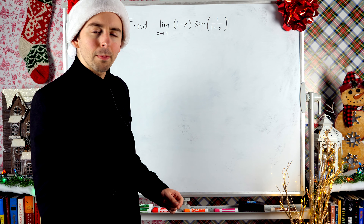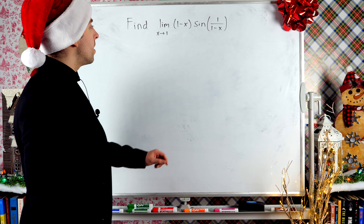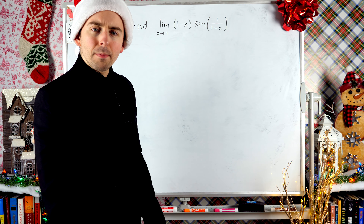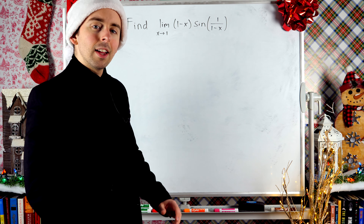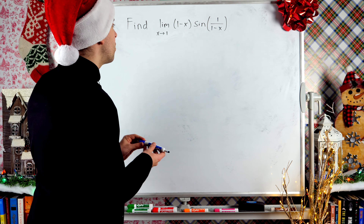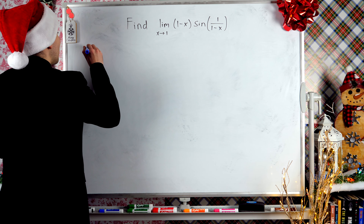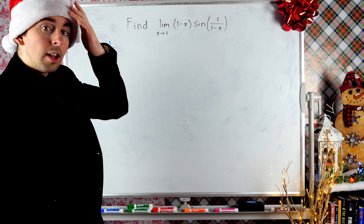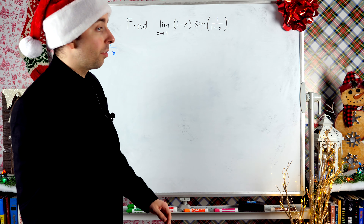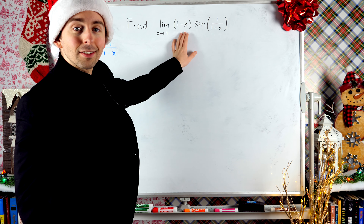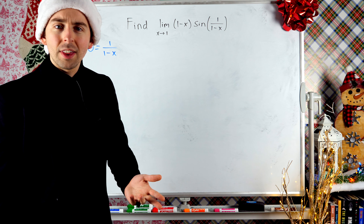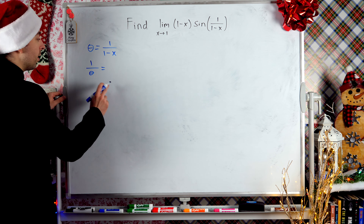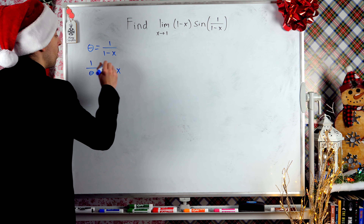So what do we do? Let's try a re-expression. Instead of having 1/(1 - x) inside the sine function — which is kind of messy — I might be able to get a better idea of what's going on if I give that a simpler name. I'm going to pick another variable, say theta, and define theta as 1/(1 - x). But my function also has (1 - x) on its own — what's that in terms of theta? Well, if theta = 1/(1 - x), then by inverting both sides, 1/theta = 1 - x.